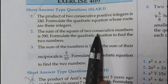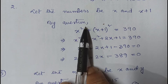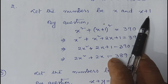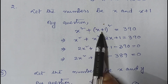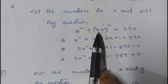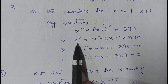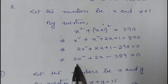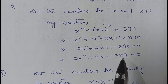Question number 2: the sum of the squares of two consecutive numbers is 390. Formulate the quadratic equation to find the two numbers. Let the numbers be x and x+1. The sum of squares gives x² + (x+1)² = 390. Using the (a+b)² formula: x² + x² + 2x + 1 = 390, so 2x² + 2x + 1 - 390 = 0, giving 2x² + 2x - 389 = 0 as the required equation.